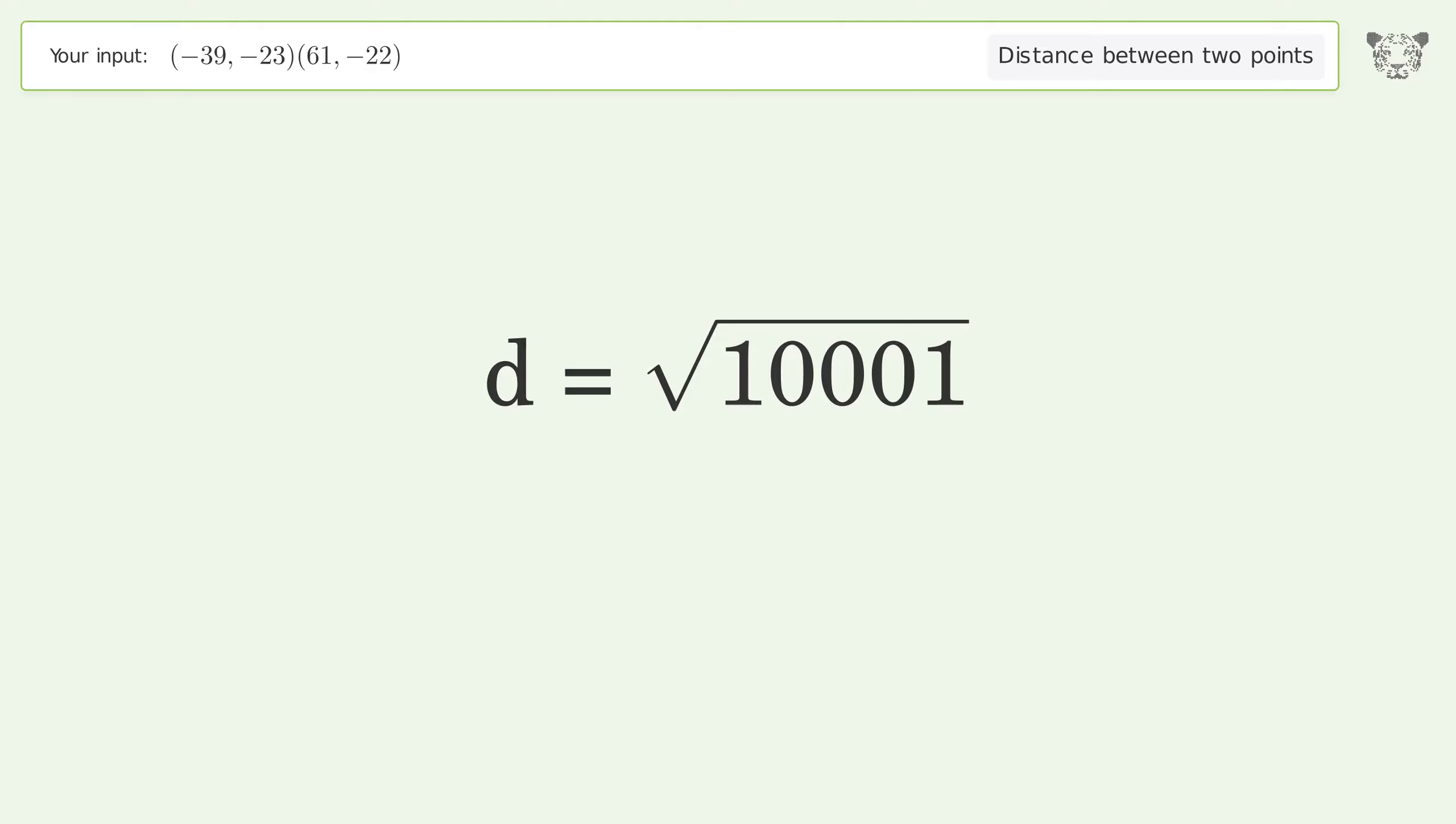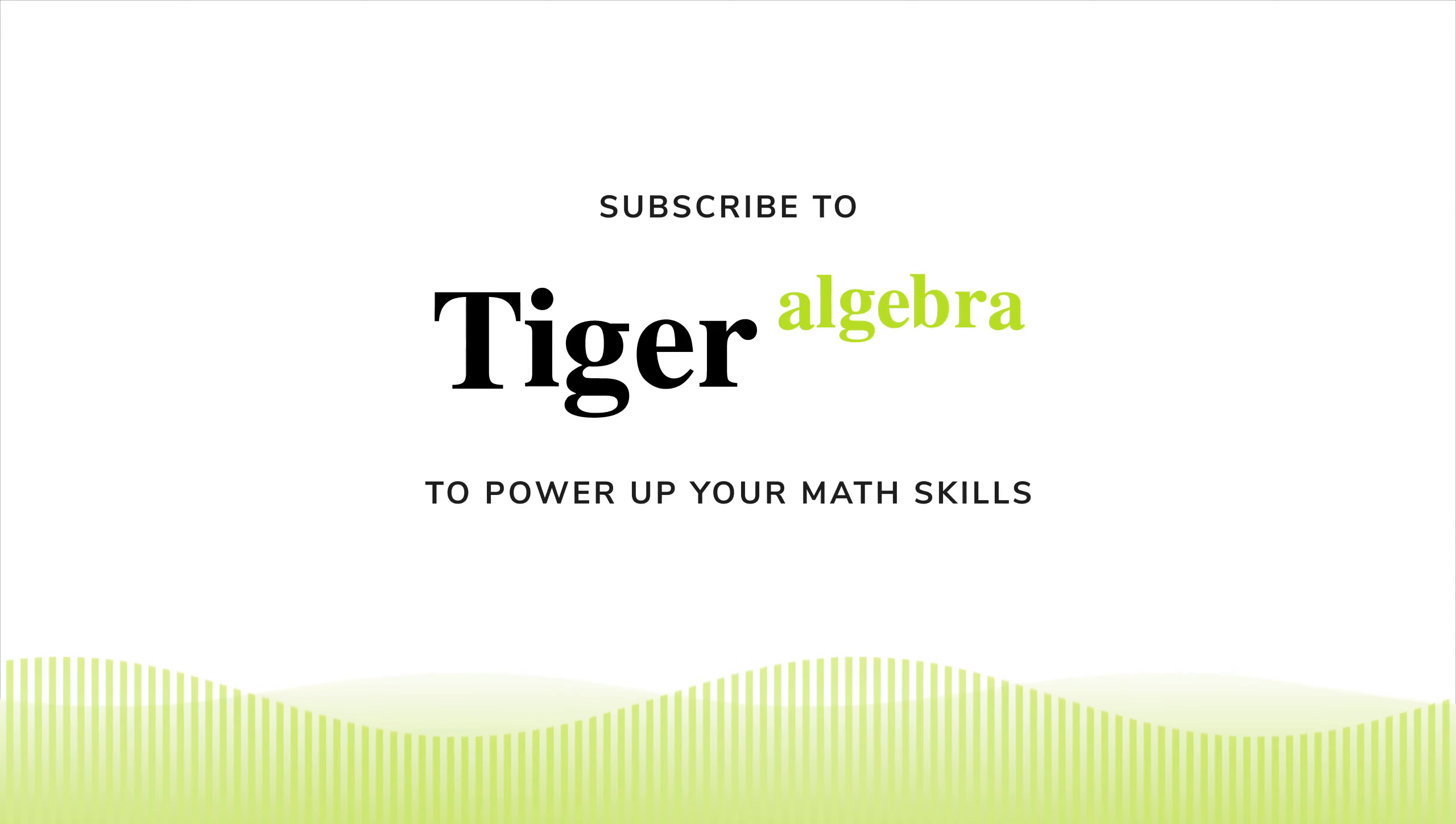And so the distance between the two points is the square root of 100001, or 100.005.